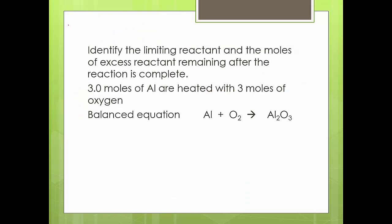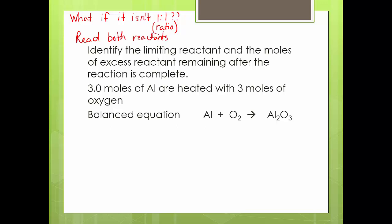Let's look at the top of page nine. Ask yourself: what if it's not one-to-one? How do I solve that problem? We're going to look at what if it's not a one-to-one ratio. The easiest way: react both reactants. I could show you something where you do a ratio and compare, but the reality is just react both reactants and see which one makes the least. Whichever makes the least amount of product is the limiting reactant.